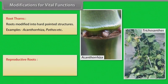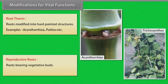Reproductive adventitious roots — roots bearing vegetative buds. Examples: Trichosanthes, Ipomoea, etc.